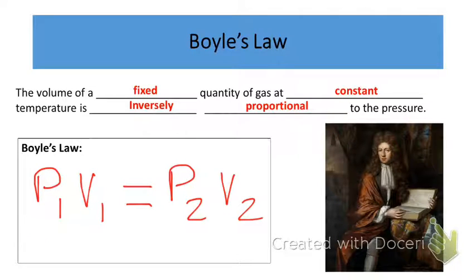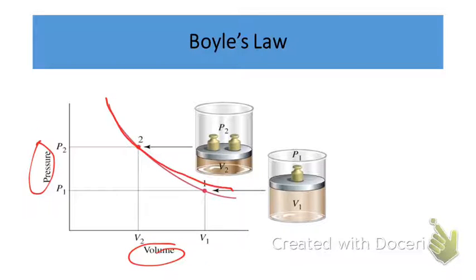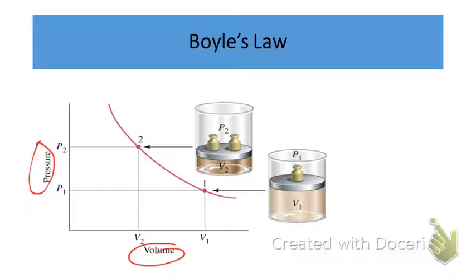Not only can we calculate these values using Boyle's Law, but we can also look at a graphical representation. If we graph pressure versus volume, we find a classic curve indicating an inverse proportional relationship. You should be able to draw or sketch the relationship between pressure and volume of an ideal gas.